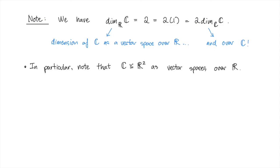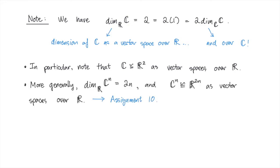In particular, note that as vector spaces over R, this means that C is isomorphic to R^2. In fact, more generally, the dimension of C^n as a vector space over R is 2n, and C^n is isomorphic to R^(2n) as vector spaces over R. In fact, this is something you're asked to prove on assignment 10.